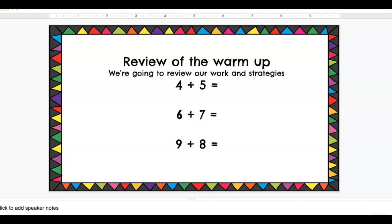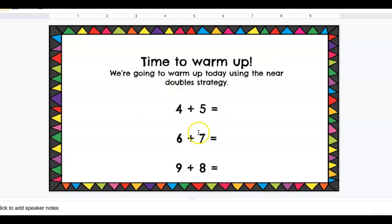So don't go to that slide until you've done 4 plus 5, 6 plus 7, 9 plus 8, showing the near double strategy.